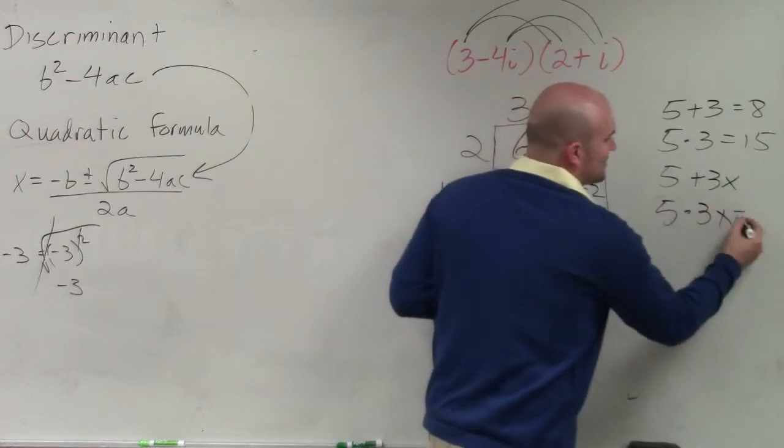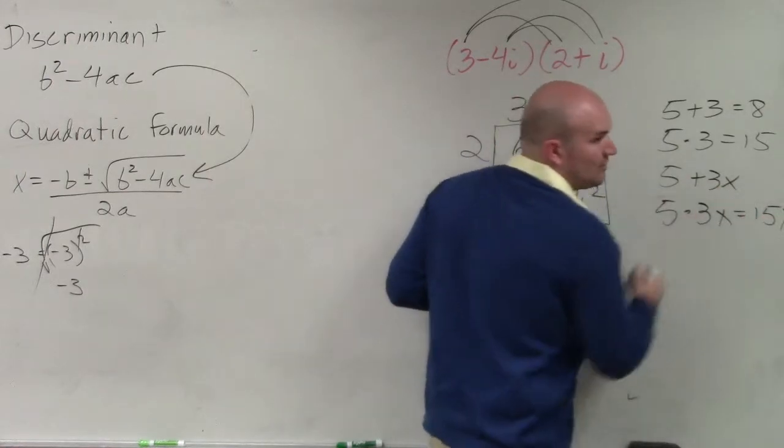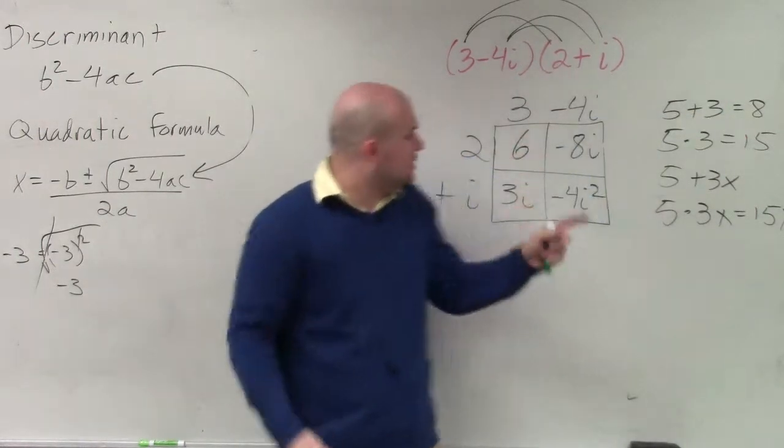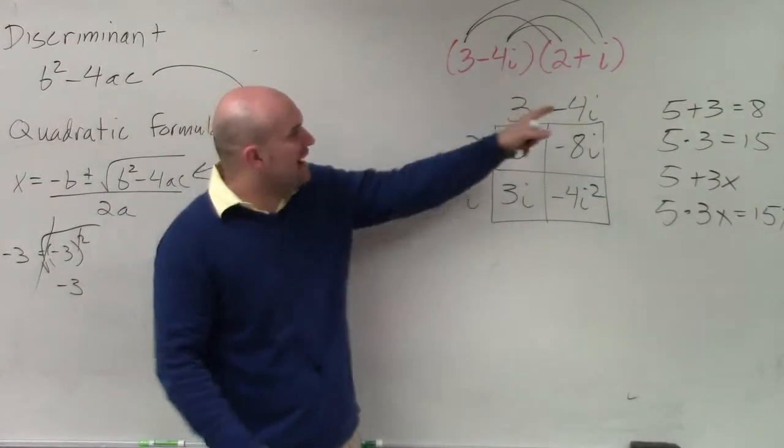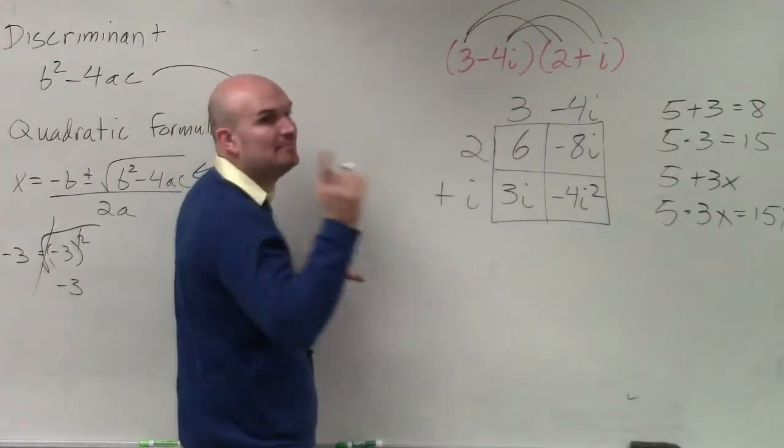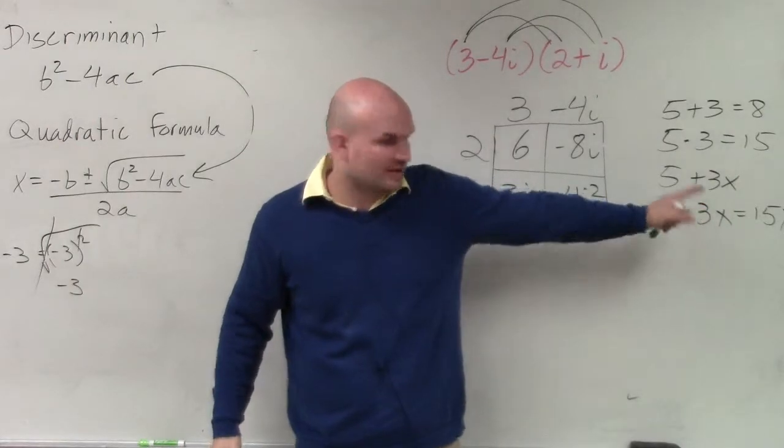You can do 5 times 3x, which is 15x. But you can't add a number plus a number with a variable. The same thing. You can't add 2 minus 3i. You can't do 3 minus 4i, but you can multiply them just like what we did with variables.